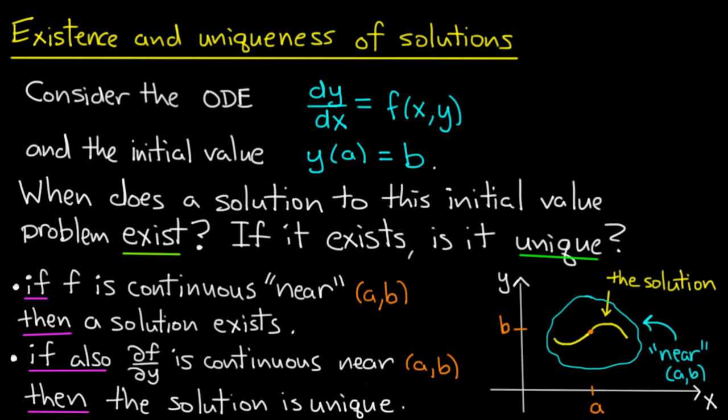The second subtle thing is that this is not an if-and-only-if theorem. These conditions are not necessary for existence and uniqueness. So there's nothing to say that even if f is not continuous, and even if ∂f/∂y is not continuous, I still may have existence and uniqueness.